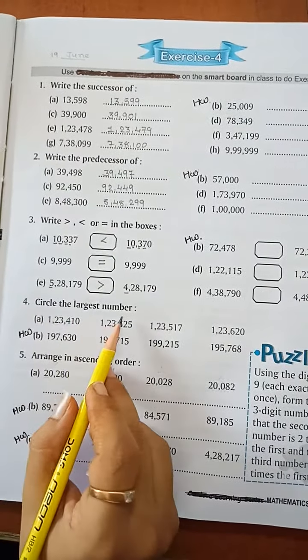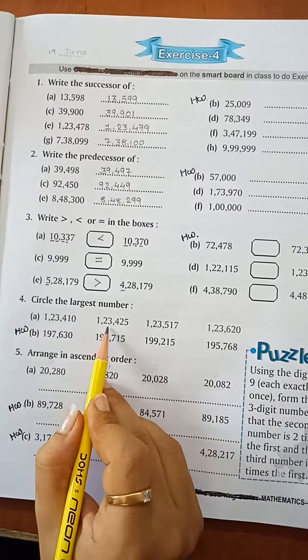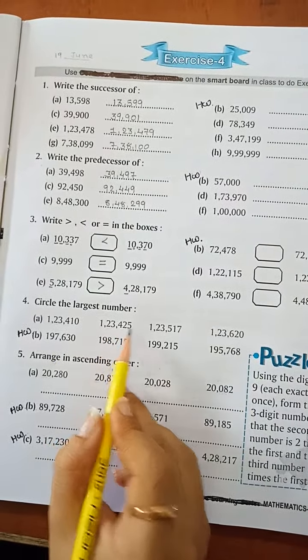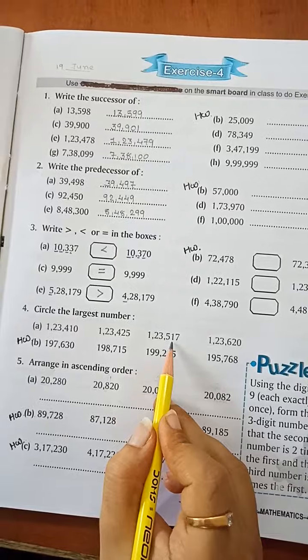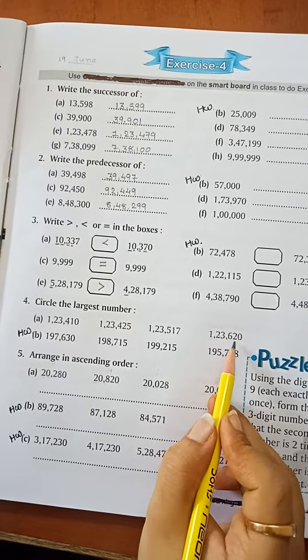Question number 4. Circle the largest number. 1 lakh 23,410, 1 lakh 23,425, 1 lakh 23,517, 1 lakh 23,620.